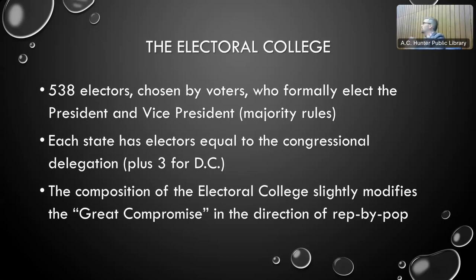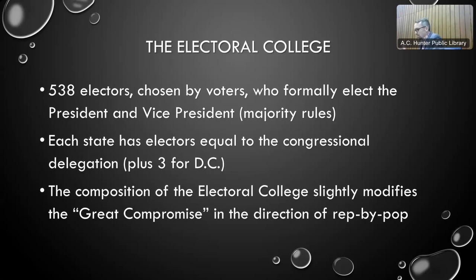So the Electoral College is certainly one of the most arcane features of the Constitution and of American politics. In addition to being arcane, it's kind of obscured by the actual conduct of the presidential election campaign, which makes it appear as though Americans are directly choosing their president — but that's not actually what they're doing. The basic points are: first, that there are 538 electors — 538 people chosen by voters who formally are the ones who cast a vote for president and vice president.